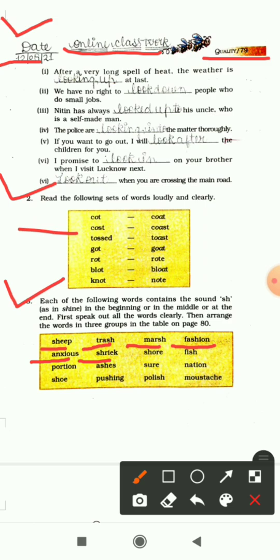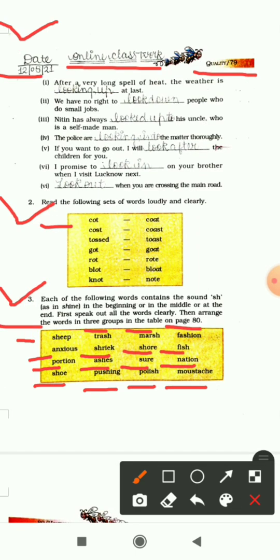Shriek, the sound is coming in the starting. Shore, the sound is coming in the starting. Fish, the sound is coming in the last. Portion, the sound is coming in the middle. Ashes, the sound is coming in the middle. Shore, the sound is coming in the starting. Nation, the sound is coming in the middle. Shoe, the sound is coming in the starting. Pushing, the sound is coming in the middle. Polish, the sound is coming in the last. Mustache, the sound is coming in the last. You can see that in all the words the sound is there in the starting, in the middle, or at the end. Now we have to write the words in the correct category.